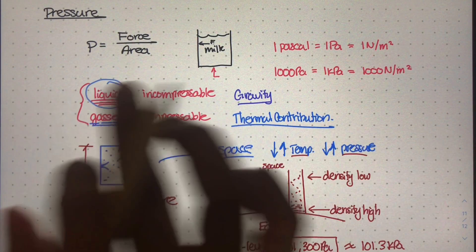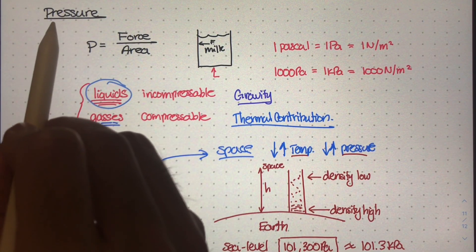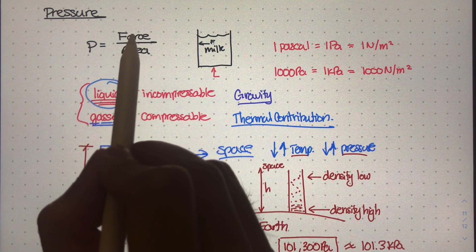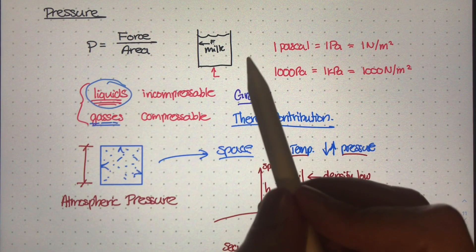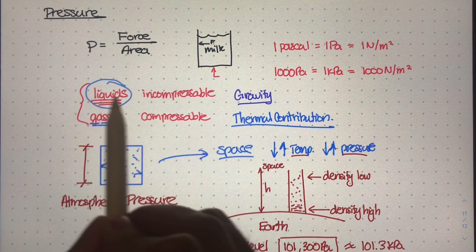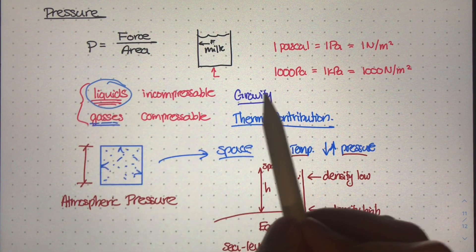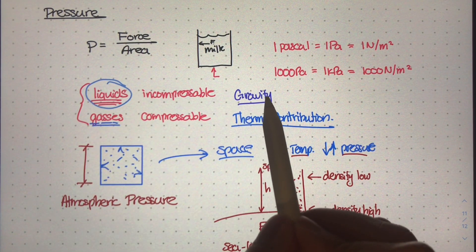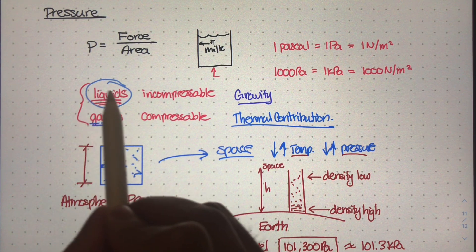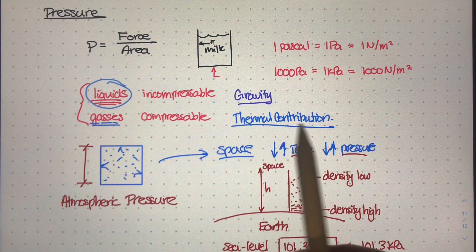Welcome back. In the previous video, we were talking about pressure and how pressure was really this ratio of force divided by area. We were studying two types of fluids: liquids and gases. We found out that for liquids, gravity is usually the dominant factor in determining the pressure anywhere inside that body of liquid. And for gases, it's actually the temperature.